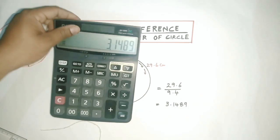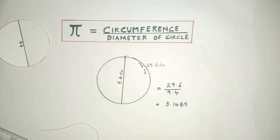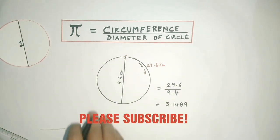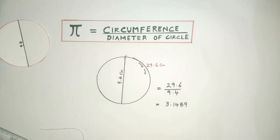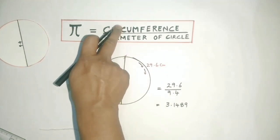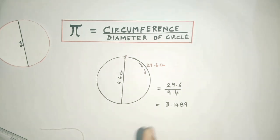This is approximately the value of pi. So in this way we can derive the value of pi. Interesting to notice, all circles of different sizes will have the same ratio - that is, the circumference by diameter of any circle will give you 3.14. I hope you understood the video. Thank you so much.